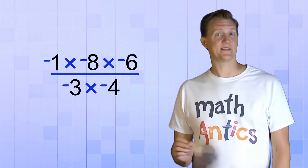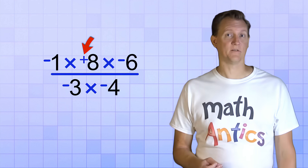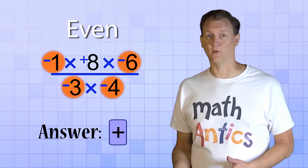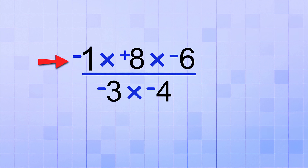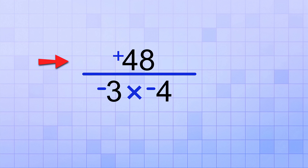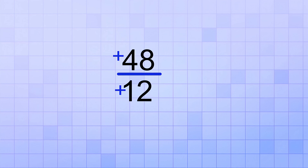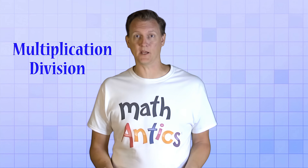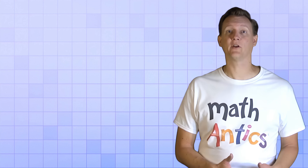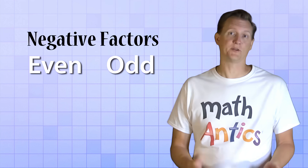What if we make one slight change to that same problem and make one of the numbers on top positive instead of negative? Then we'd have only four negative numbers, which is even, so the answer should be positive 4. On the top: negative 1 times positive 8 is negative 8; negative 8 times negative 6 is positive 48. On the bottom: negative 3 times negative 4 is positive 12. Then 48 divided by 12 is positive 4 — just as expected. All the multiplication and division works the same; you just have to figure out if you have an even or odd number of negative factors.